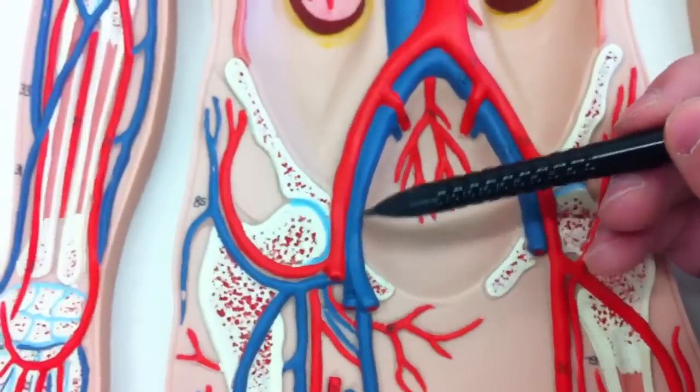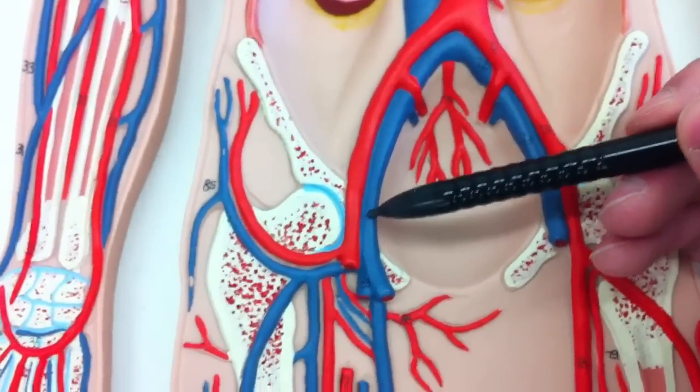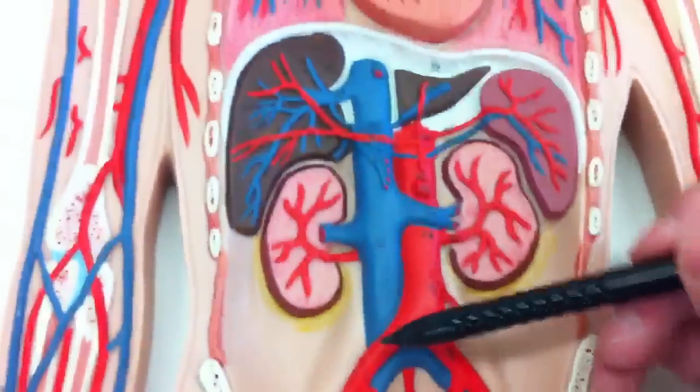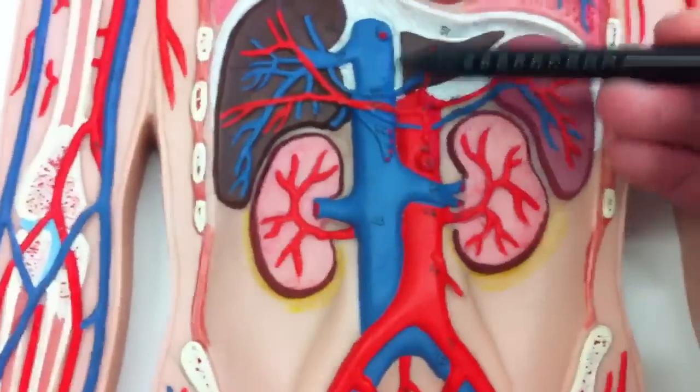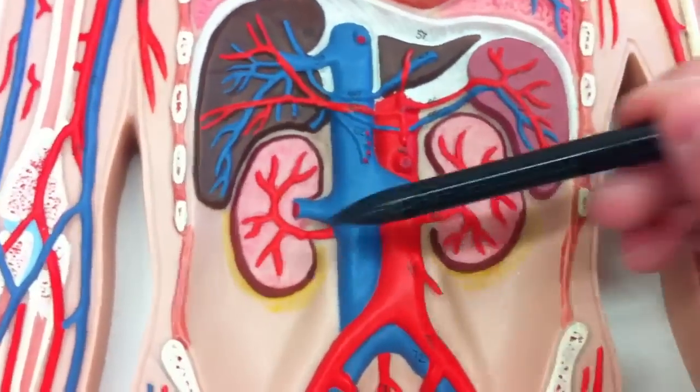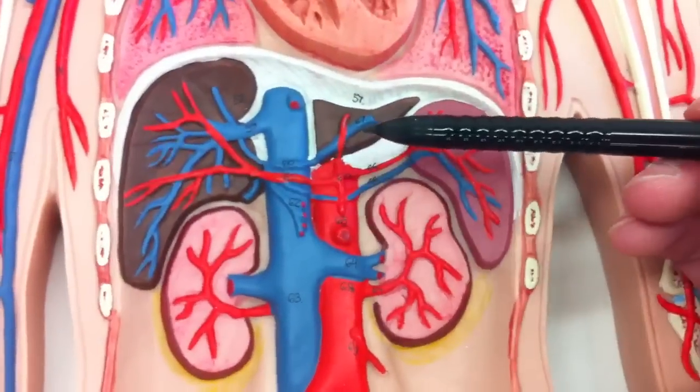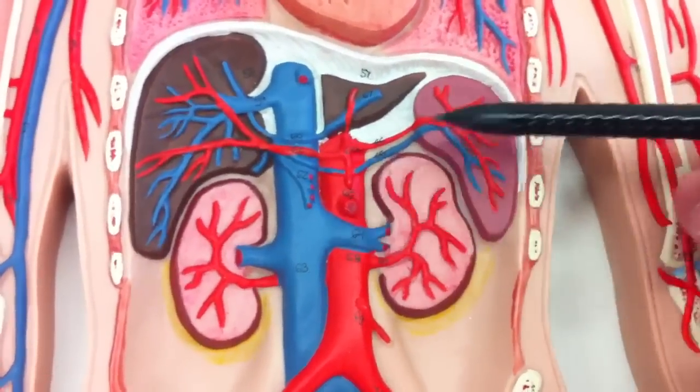Then you have the external iliac, internal iliac, common iliacs. And then the inferior vena cava is this big guy right here. So you can see the renal veins right here, hepatic veins right here. There's a gastric and a splenic over here.